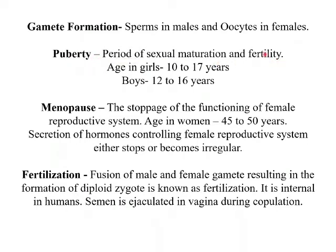Every girl is born with 2 to 4 million oocytes in the ovaries, but they are immature. They get matured only after puberty, which is about 10 to 17 years in girls, and after that one ovum or oocyte is released from either of the two ovaries. Both male and female gametes are formed due to meiosis.